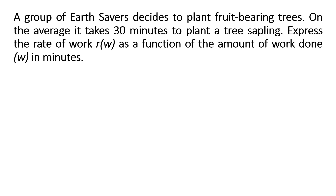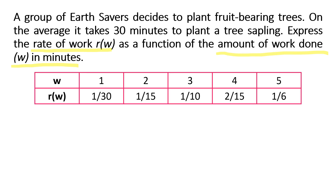A group of earth savers decides to plant fruit-bearing trees. On the average, it takes 30 minutes to plant a tree sapling. Express the rate of work r(w) as a function of the amount of work done w in minutes. In this situation, the independent variable is the amount of work done in minutes, represented by w, and the dependent variable is the rate of work r(w). Note that as the rate of work r(w) gets faster, the amount of work done w increases, and as the rate slows down, the work done decreases. Let's consider this table: the first row w refers to the amount of work done in minutes, while the second row r(w) refers to the rate of work.